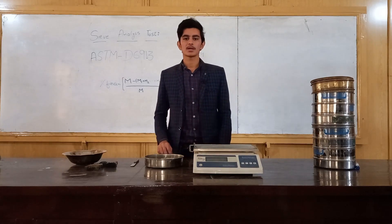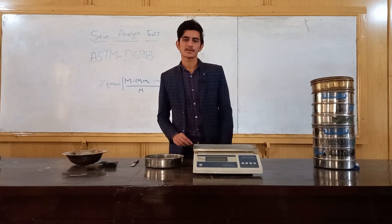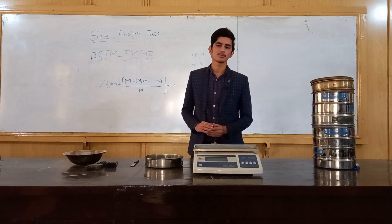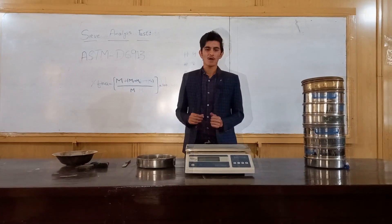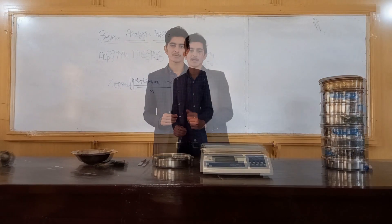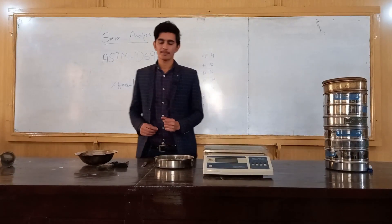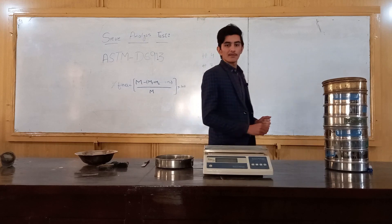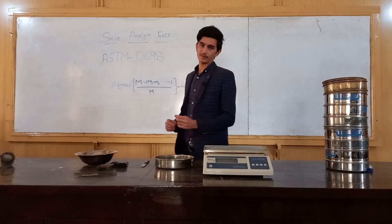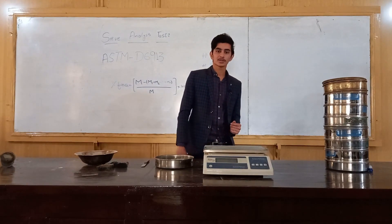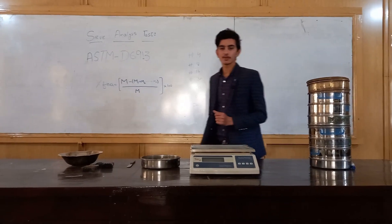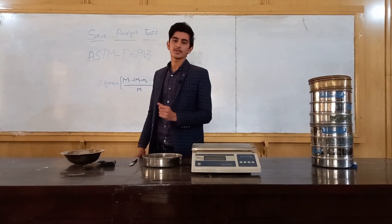As we all know, the soil contains different particle sizes. The Sieve Analysis Test is used to distinguish between different particle sizes by passing the soil sample through a different set of sieves. After performing this test, we will be able to find different engineering properties like hydraulic conductivity, compressibility, and shear strength. Also, after drawing the graph, we can find the coefficient of uniformity and coefficient of curvature. The apparatus we will be using in this experiment will be according to ASTM standard D6913.